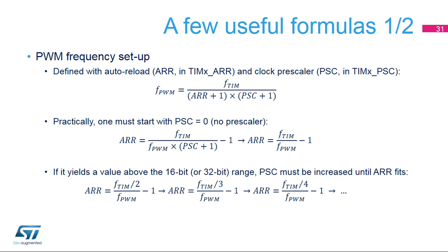Starting from PSC equals 0, meaning no clock division, guarantees that the PWM will have the finest possible resolution. In this case, the ARR value is simply the ratio between the timer clock frequency and the PWM frequency, the whole minus 1. If this equation yields an ARR value above the timer's ARR range, either a 16-bit or 32-bit value depending on the selected timer, the computation must be redone with a higher prescaler value.